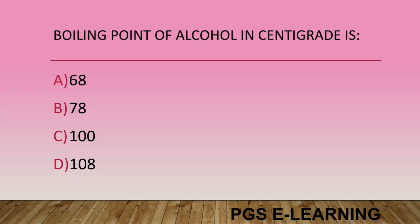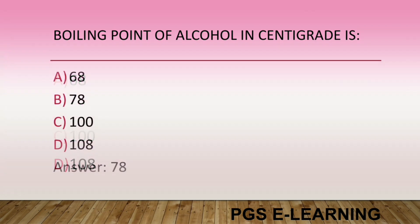The boiling point of ethanol is: Option A, 68°C. Option B, 78°C. Option C, 100°C. Option D, 108°C. Correct answer is 78°C.